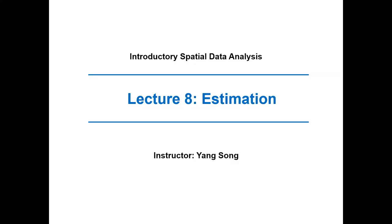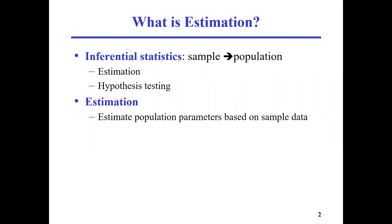In Lecture 8, we're going to discuss something called estimation. What is estimation? It's a type of inferential statistics. Inferential statistics are statistics that employ sample parameters or sample statistics to estimate population statistics. Why do we need them? Because you cannot survey the population, and it's not necessary to do that. In this class, we're going to learn how to do estimation, and we're also going to learn how to carry out hypothesis testing. They are both inferential statistics. For estimation, you want to use it to estimate population parameters based on sample data.